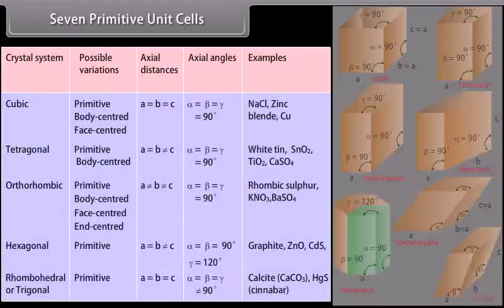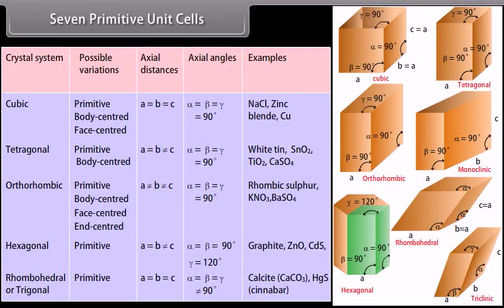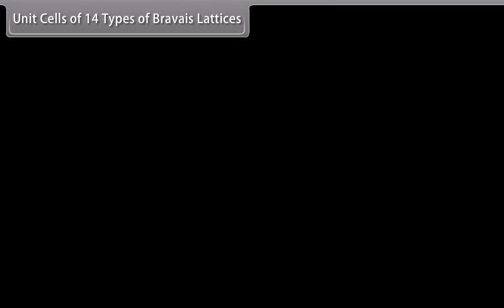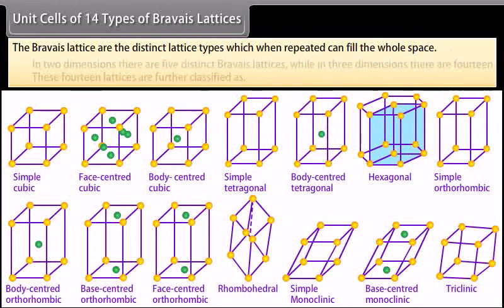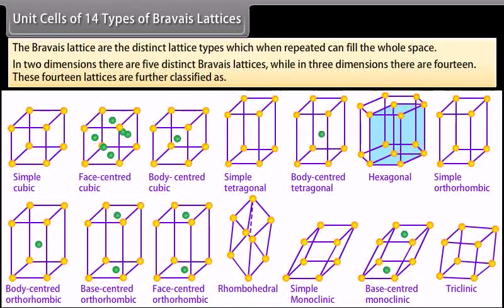There are 7 types of primitive unit cells. Their characteristics along with the centred unit cells they can form have been listed in the table. The Bravais lattices are the distinct lattice types which, when repeated, can fill the whole space. In 2 dimensions there are 5 distinct Bravais lattices, while in 3 dimensions there are 14.